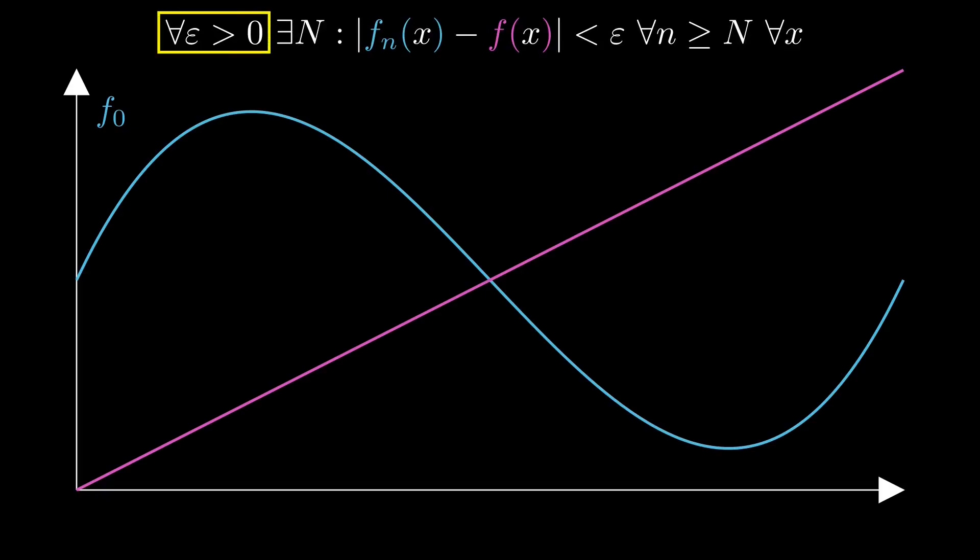For every epsilon bigger than zero, there needs to be an index big N, so that the distance between fn of x and f of x is smaller than epsilon whenever n is bigger or equal to big N. And this whole thing should be true for every point x in the input domain.